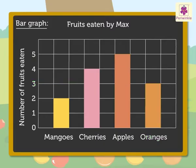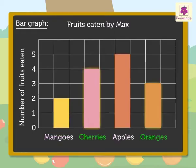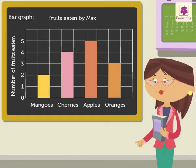From the information so obtained, we can say how many fruits Max ate in all, how many more apples he ate than mangoes and so on. Hence, we can obtain a lot of information from a bar graph too. Hope it was fun to learn about bar graphs.